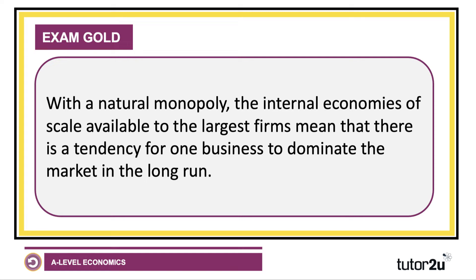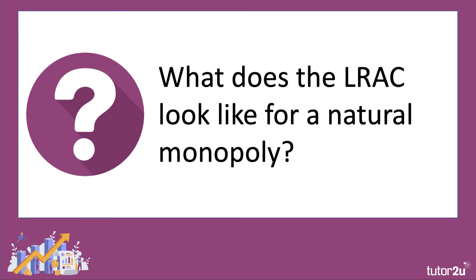With the natural monopoly, the internal scale economies available to the biggest firms mean — in a sense it's called 'natural' — there's a tendency for one business to come to dominate the market in the long run. This is a section of monopoly where you can bring in the natural monopoly argument when discussing the pros and cons of monopoly power. If the natural monopoly did not exist in some industries, there might not be a market at all.